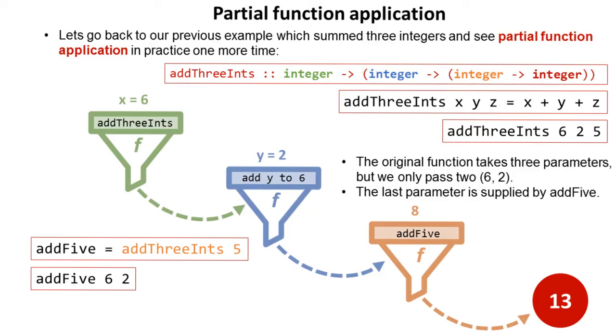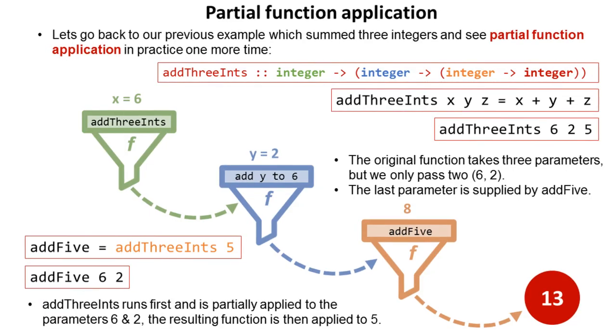The original function, as you know, takes three parameters, but we're only supplying six and two. The last parameter is supplied by addFive. AddThreeInts runs first, is partially applied to the parameters six and two, and the resulting function is then applied to five.